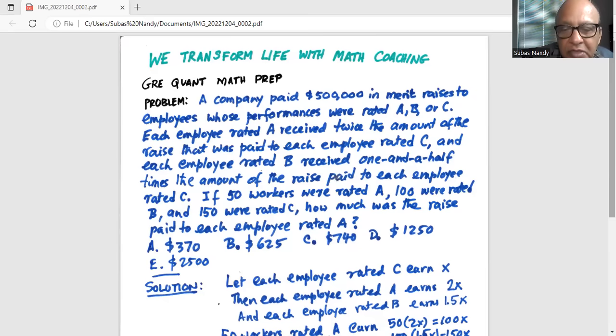Let each employee rated C earn X. Then each employee rated A will earn 2 times X, and each employee rated B will earn 1.5 times X.